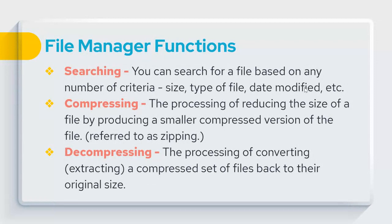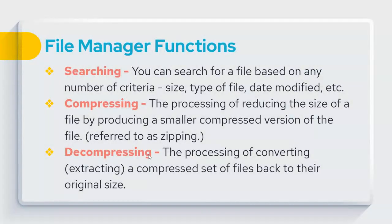You can search for files based on criteria like file size, type, or date last modified. File compression reduces the file size by creating a smaller compressed version — this is called zipping. To email a folder, right-click it, select 'Send to Compressed Folder,' and attach the zip file. The recipient decompresses it by right-clicking and selecting 'Extract,' choosing a save location.